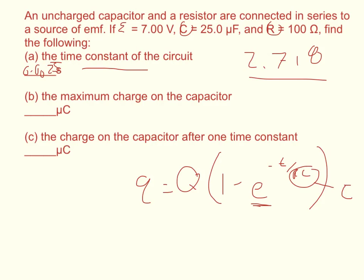To find the maximum charge, you have to imagine that the capacitor doesn't have a resistor on it. If the capacitor didn't have a resistor on it, that would tell you the maximum charge you could get. Remember the equation from chapter 16 for a capacitor: the capacitance is equal to the charge over the potential difference.